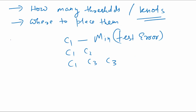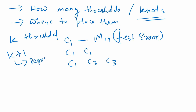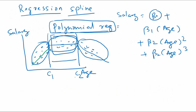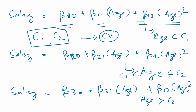If you have k number of thresholds, you will have k+1 regression lines — k+1 regression equations. As we just saw, we had two thresholds and we were able to fit three regression equations: one, two, and three.